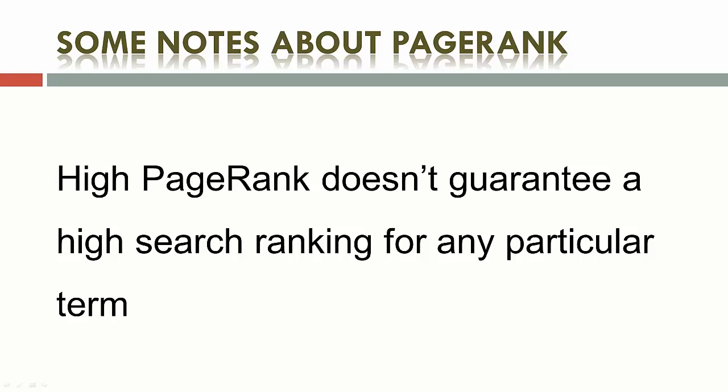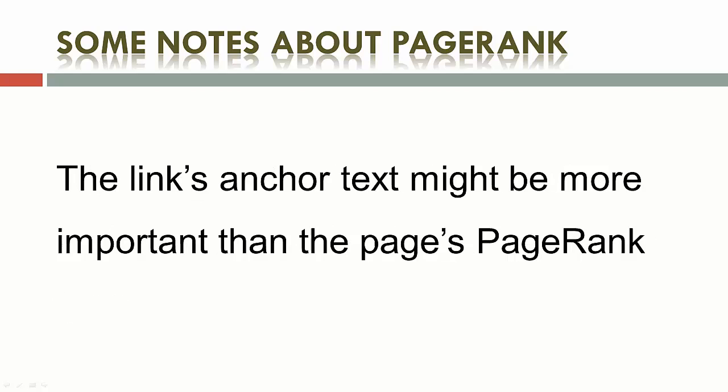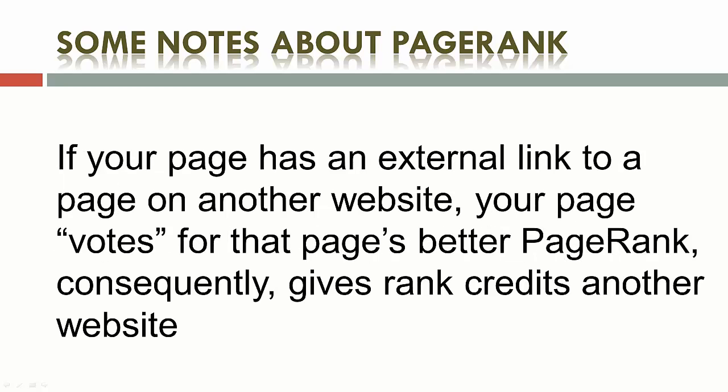Page rank doesn't guarantee a high search ranking for any particular term. Otherwise, websites with the highest page rank — such as Adobe, Google, or Wikipedia — would always be shown in search results for any user search. The link's anchor text might be more important than the page's page rank. If your page has an external link to a page on another website, your page votes for that page's better page rank and consequently gives rank credits to that other website.